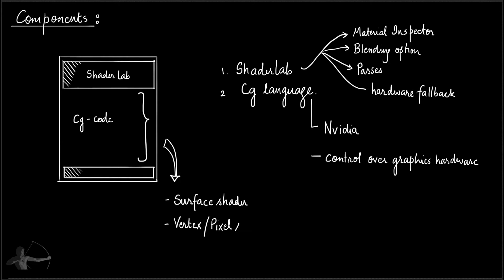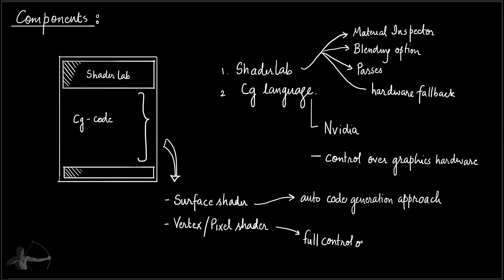If we are writing a vertex shader, we will have to write a pixel shader alongside it as well. Unity provided a faster way of writing shaders in the form of surface shaders, which automatically generates some CG code for you. However, this approach takes away a lot of transparency from the developer, giving lesser control. To understand the details of shader writing, we will learn to write vertex and fragment shaders for full control and visibility.